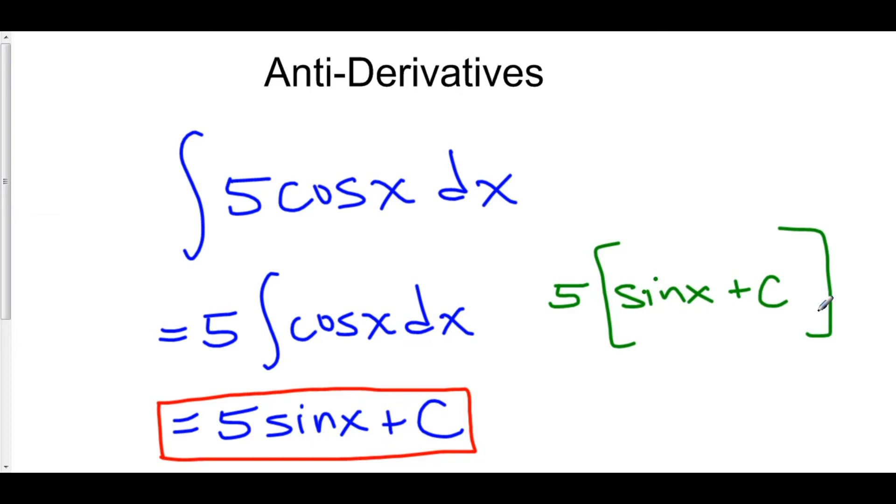c is just a constant. It's any constant. And if you multiply any constant by 5, you still have any constant. And so 5 times c, we just call c. It's still a constant.